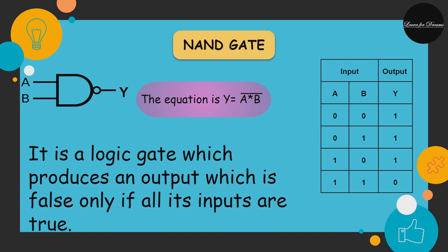NAND gate is a logic gate which produces an output which is false only if all its inputs are true. As you can see, the equation is Y = (A*B) bar. Put the values of A and B which are there in this table. You will get the same output. NAND gate is a universal gate.